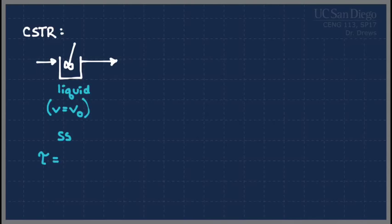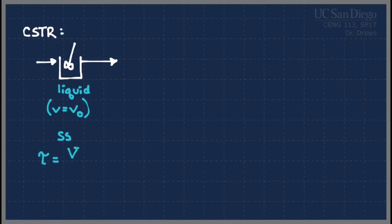Tau is more of a parameter used in a CSTR because the flow patterns inside a CSTR are more difficult to visualize than they typically are with a plug flow or packed bed, where you assume everything is moving in from one side and out the other. We use this residence time — whose definition has not changed — which is the volume of the CSTR divided by the volumetric flow rate: capital V divided by lowercase v.